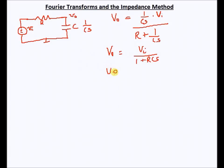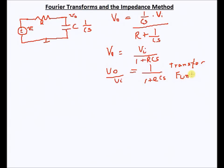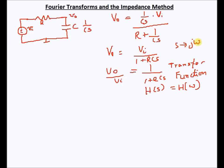If I take Vo divided by Vi, this equals 1 over (1 + RCs). This is called the transfer function, denoted H(s) or H(ω). You also know that Cs can be replaced by jω, and this is what we learned.